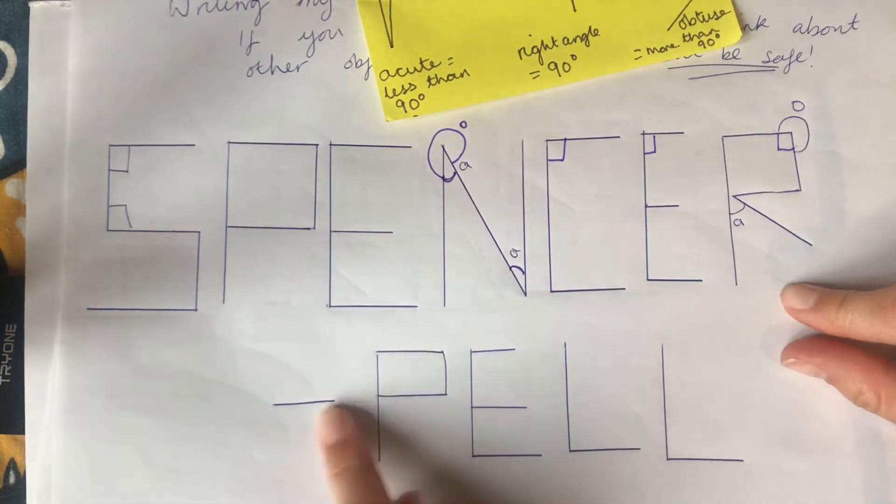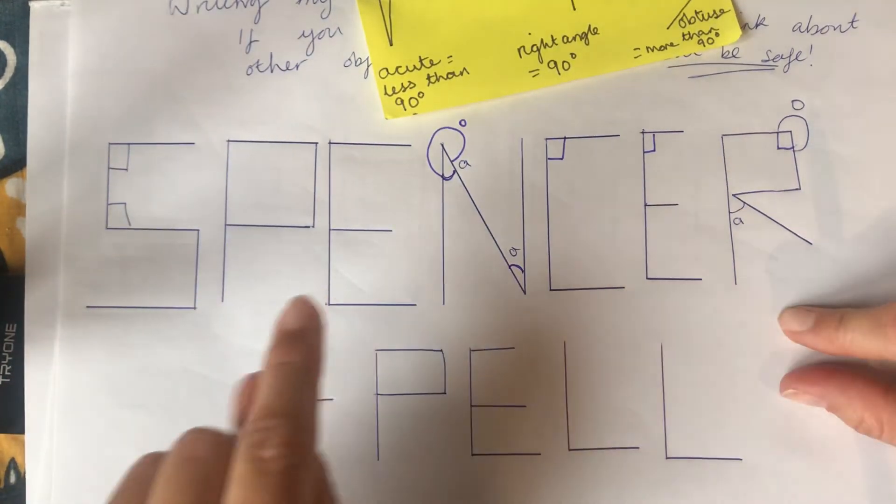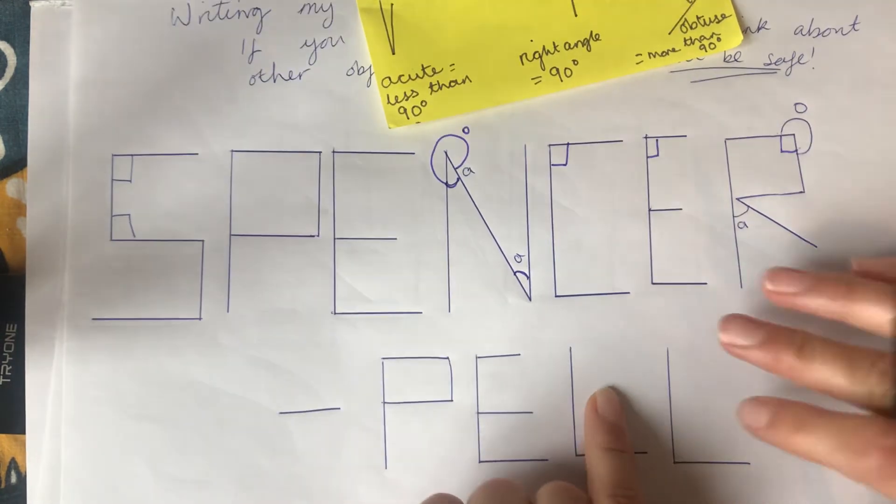So you can have a go like this and just label the angles if you want to, which I think would be really good, and then if you can upload a picture that would be really fun to see all your hard work. And then just something extra fun, oh no not there.